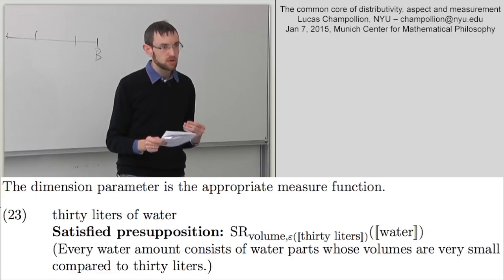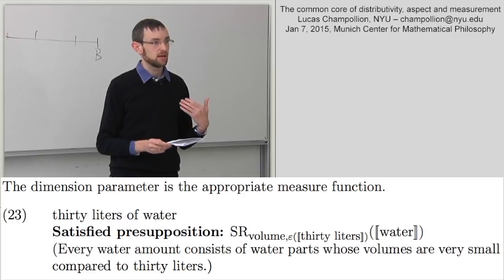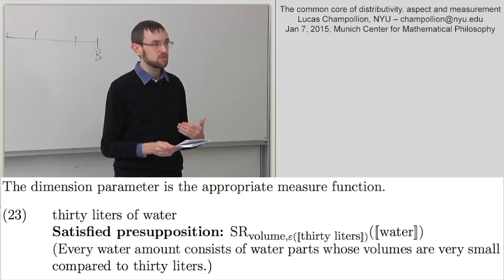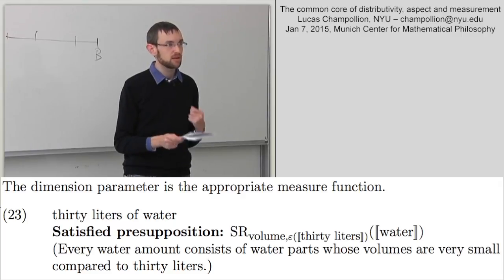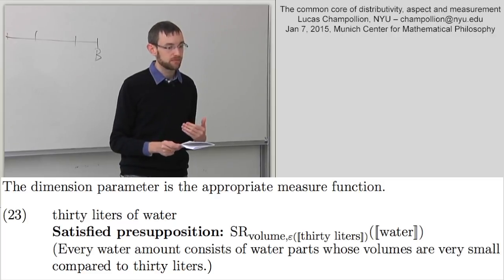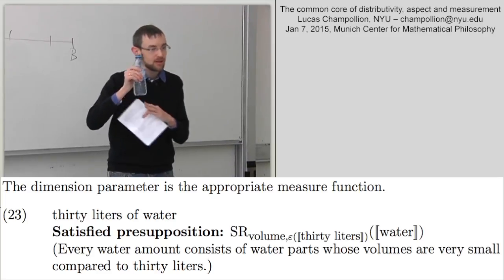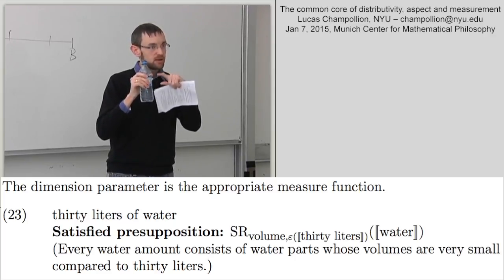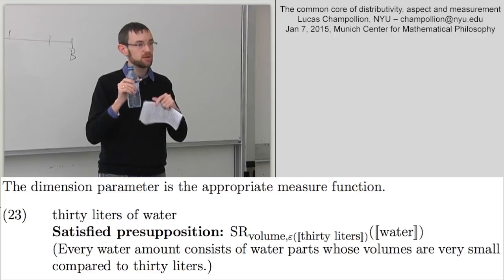Moving from event pseudo-partitives to substance pseudo-partitives like '30 liters of water': instead of talking about events we talk about amounts of water, and instead of requiring something about temporal extent we require something about volume. Specifically, we require that every water amount consists of parts such that each part is itself water and each has a very small volume compared with 30 liters. If you take a certain amount of water, there is never a problem dividing it into parts that are themselves water with very small volumes. So the presupposition is satisfied.